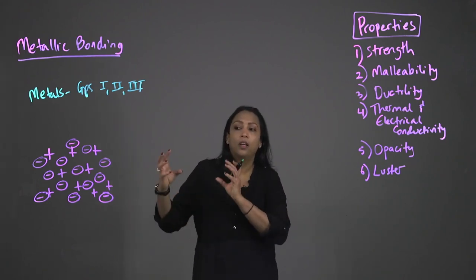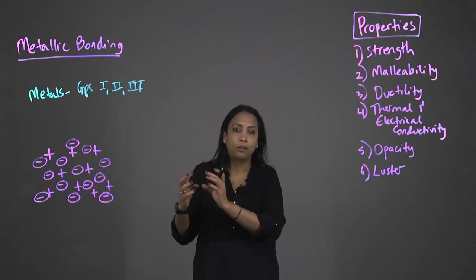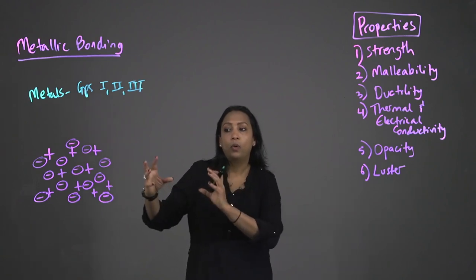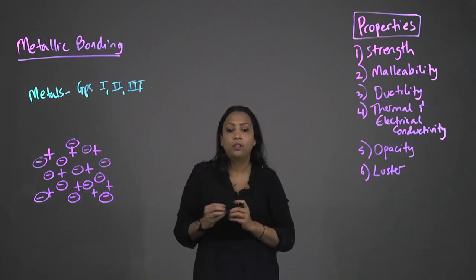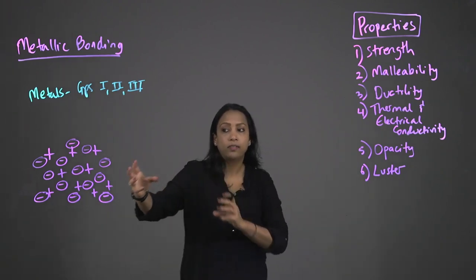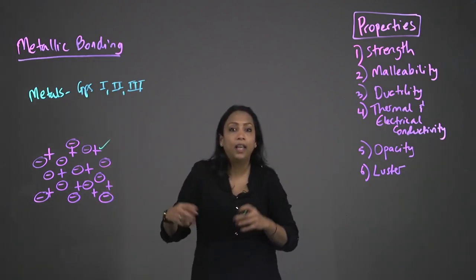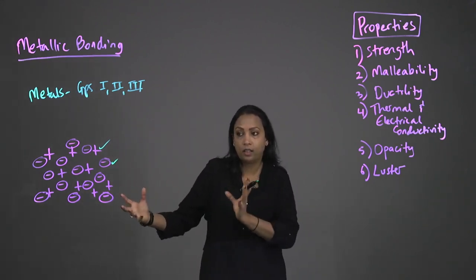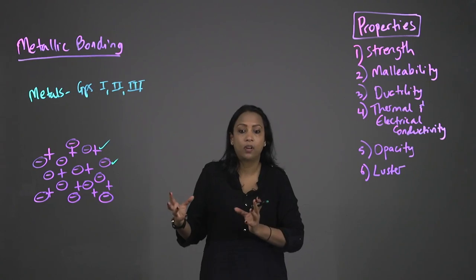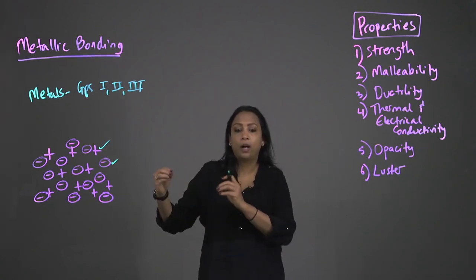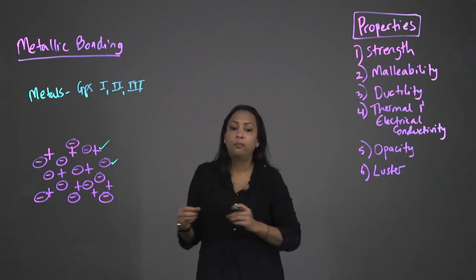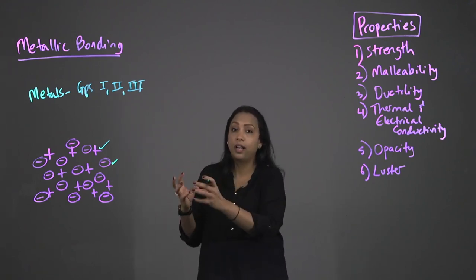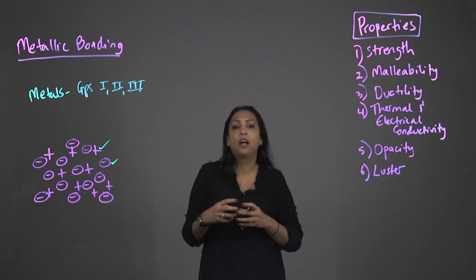The metallic atoms eject these valence electrons and what is left are cations. The positively charged cations are held together by what we call a sea — S-E-A — of delocalized electrons. We have mutual attraction between the lattice of cations and the conduction electrons, which keeps the entire structure together.